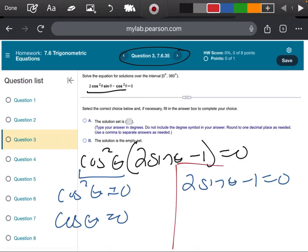When I look at this one here, if I move that 1 over, that's going to be a positive 1, and then if we divide it by 2, that's telling me that sine is equal to 1 half.